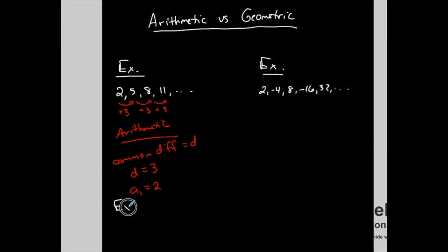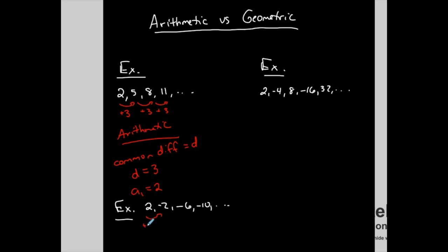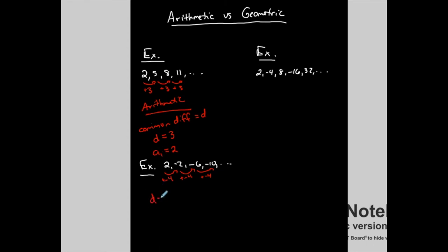Let me do another example: 2, negative 2, negative 6, negative 10, and so on. What do you notice? There is a pattern — I'm adding negative 4, or you could say I'm subtracting 4, which is the same thing. So my common difference D is equal to negative 4. This is also arithmetic because I'm adding the same number from every term to get to the next. The common difference is always the number being added from each term to get to the next.